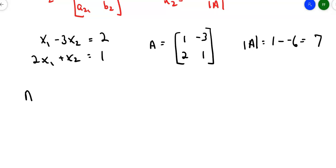So what is A sub 1? A sub 1 is replace the first column with the 2, 1, leave the negative 3, 1 right where it is. Matrix A sub 2 is leave the first column where it is, replace the second column with the 2, 1.